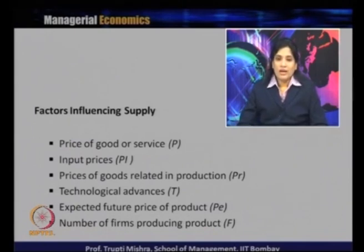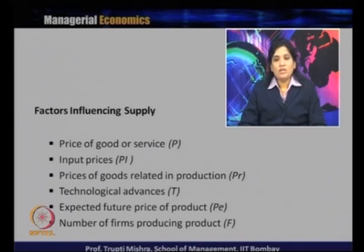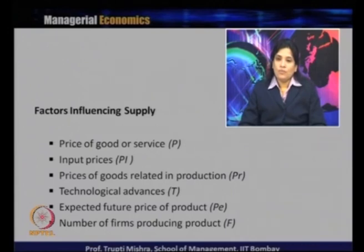We will now discuss the factors that influence supply. The first factor is the price of goods and services. As discussed, price and quantity supplied are positively related. The seller or producer always looks for profit when producing and selling in the market — if price is more, they will sell more. So the first factor influencing quantity supplied is the price of goods and services.